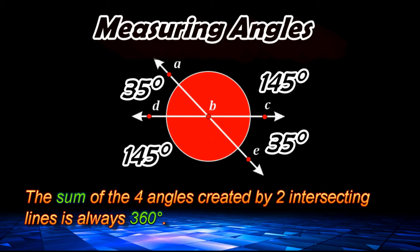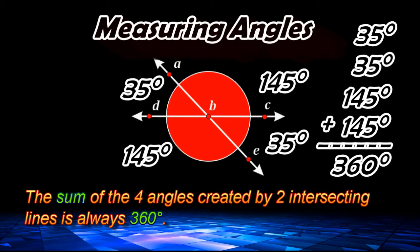Taking a look at angle CBE, that would measure 35 degrees. Angle ABC has an angle measure of 145 degrees. Angle ABD has an angle measure of 35 degrees, and angle DBE has an angle measure of 145 degrees as well. And if we add these four angle measures together, they would have a sum of 360 degrees.